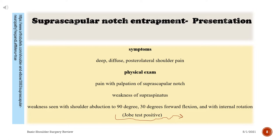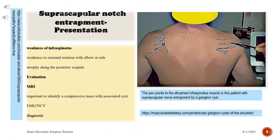Symptoms: deep, diffuse, posterolateral shoulder pain. Physical exam: pain with palpation of the suprascapular notch. Weakness of supraspinatus seen with shoulder abduction to 90 degrees, 30 degrees forward flexion, and with internal rotation — Jobe test positive. Weakness of infraspinatus with weakness to external rotation with elbow at side. Atrophy along the posterior scapula.